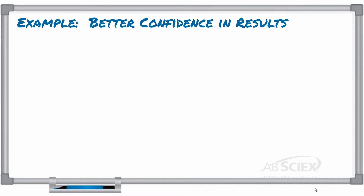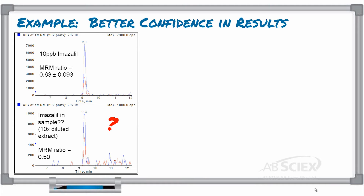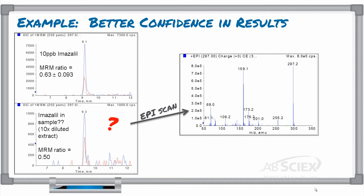Check this out — here is a great example. It looks like you've detected imazalil in your sample, but the MRM ratio is just slightly outside of the acceptable range of .63, plus or minus .093, identified from your imazalil standard. So you're just not sure if you should report the imazalil in this sample. If you're using a Q-TRAP, an EPI scan can be triggered automatically when the first imazalil MRM is detected, resulting in a full MS-MS scan of that peak. This means that more fragments are scanned and detected, giving you more information to confirm if this peak is imazalil. Think of a full MS-MS scan as a fingerprint for your detected compound.